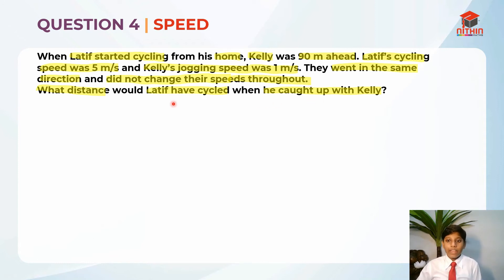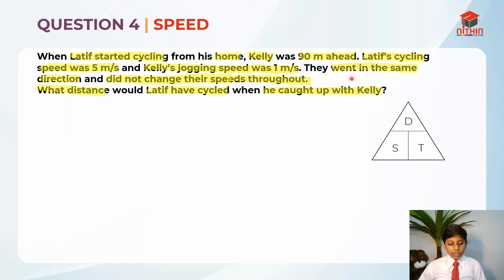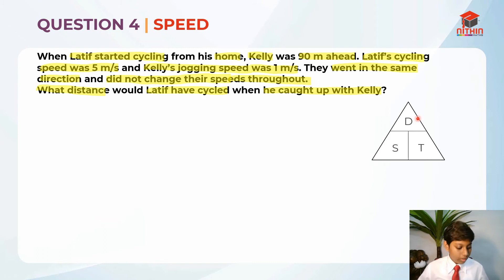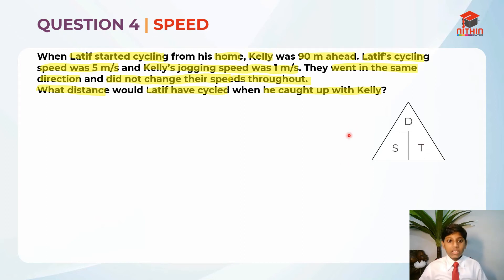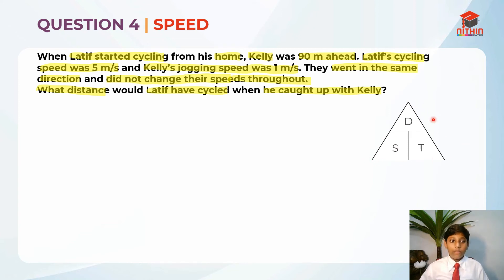Obviously Latif should have caught up with Kelly — he's on a cycle and Kelly is just jogging. Before you even start doing the question, you should draw this DST triangle. Even if you remember all the formulas, draw it: distance equals speed times time, time equals distance over speed, and speed equals distance over time. These are the 4 main formulas you need to know, all in one tiny triangle. You can draw it really small in the corner for your own reference.